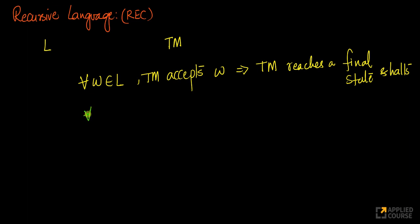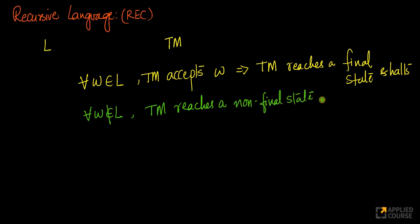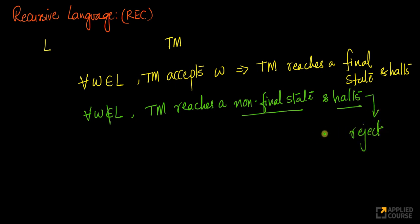If you give a word that doesn't belong to the language, the TM reaches a non-final state and halts — meaning we reject the word. In both cases, whether the word belongs to the language or not, the Turing machine halts. This is very important.